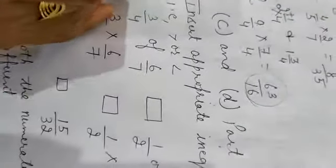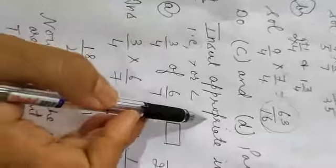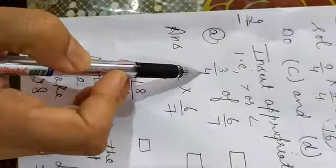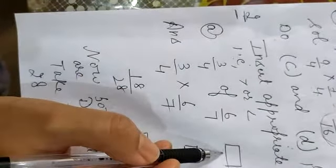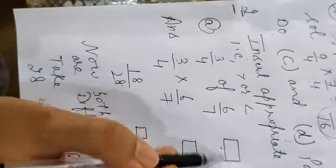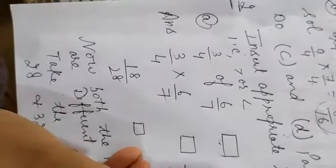Part 2, question number 2. Insert appropriate inequality signs, that is less than or greater than. Sum is given: 3 by 4 of 6 by 7. We have to put the sign. Sign will come after the answer. 1 by 2 of 15 by 16. Of means we have to multiply.